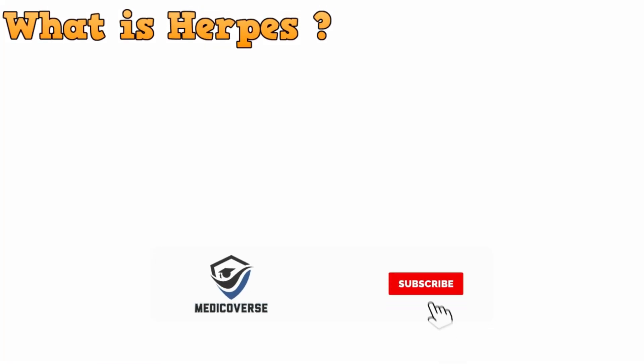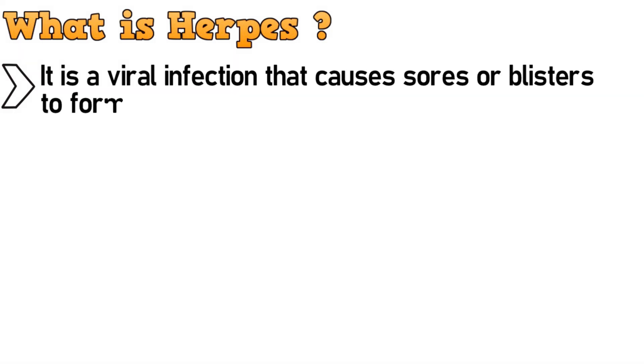Let's start with the basic question, what is herpes? It is a viral infection that causes sores or blisters to form in or around the mouth or genitals.